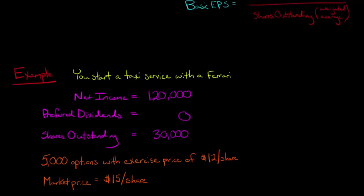We have 5,000 options that are outstanding, they have an exercise price of $12 a share. So investors can buy 5,000 shares in our company and pay $12 each for those shares. Now our market price of the shares right now happens to be $15.